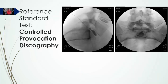The reference standard for discogenic pain, against which directional preference was contrasted, was controlled provocation discography. In this procedure, a spinal needle is guided into the center of the intervertebral disc and hydraulic distension is produced by injecting contrast material. The pressure achieved within the disc was measured using a manometer.